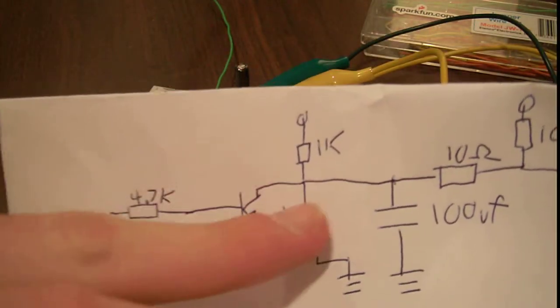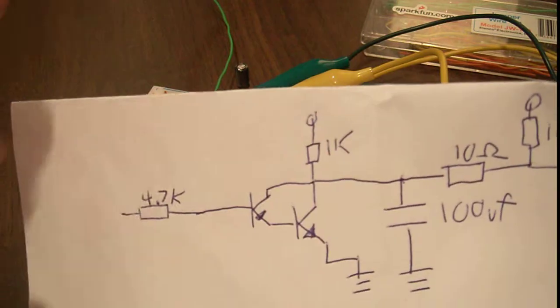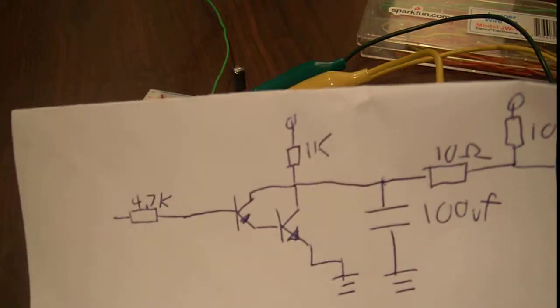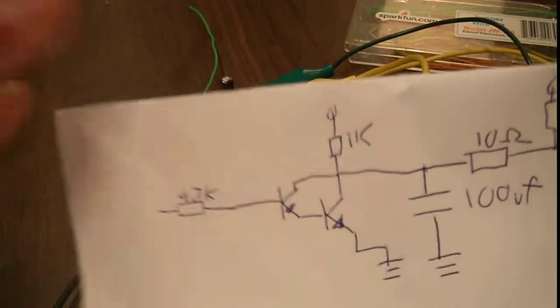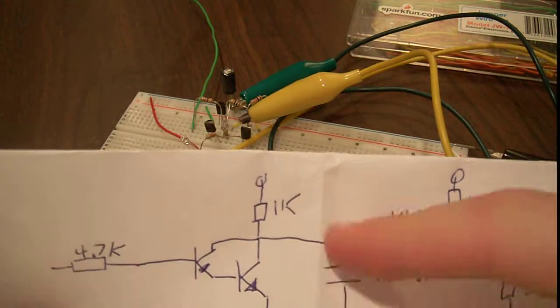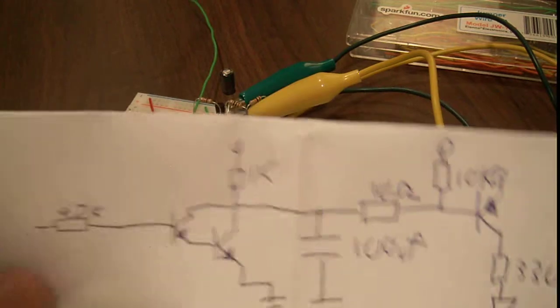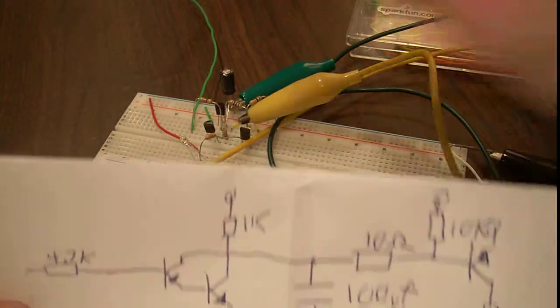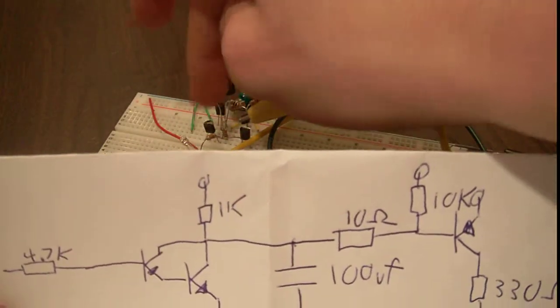It gets amplified by this Darlington configuration with this 1K pull-up to create a voltage. So now you have a pretty strong, about 60 hertz or so signal. And right here, you have a 100 microfarad capacitor. And it's this capacitor there. This is the Darlington configuration, those two transistors right there.